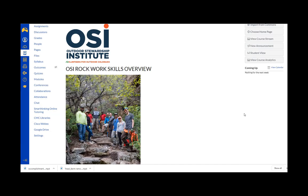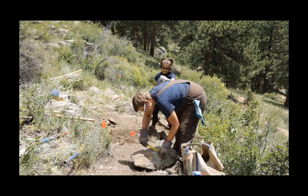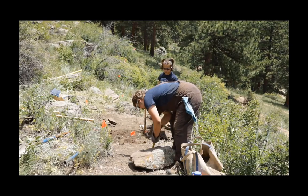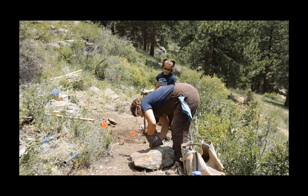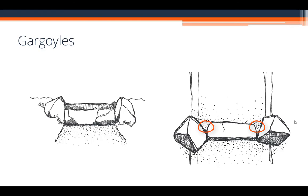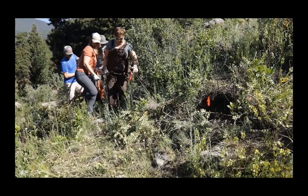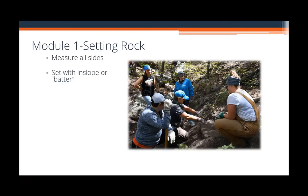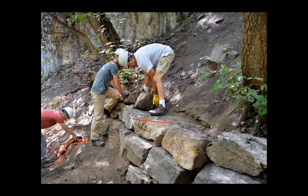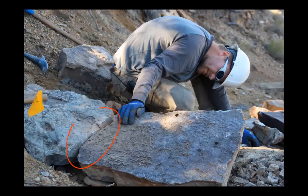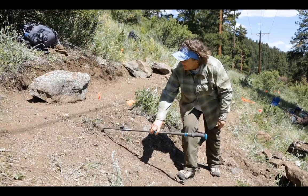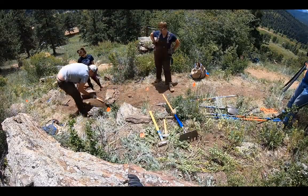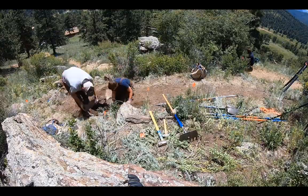Once trainees complete crew leader training, OSI has multiple advanced courses that can be taken, and we've developed three as online modules. The Rock Skills Overview gives students an overview of the process and practice of dry stone masonry, and how rock sourced in the field can be used to create long-lasting trail structures. Students learn how to safely work with and transport rock in the field, how rock is set without using mortar, and the components and process of constructing rock steps and rock walls.